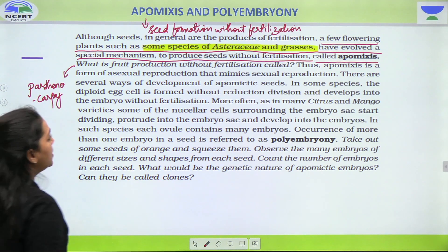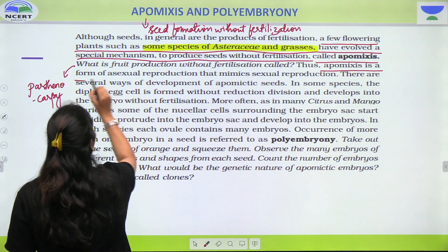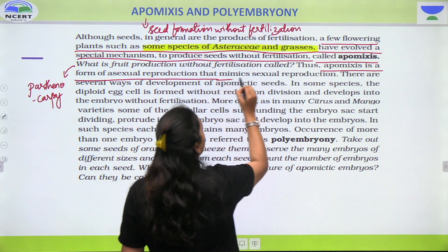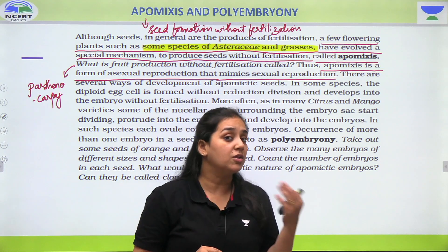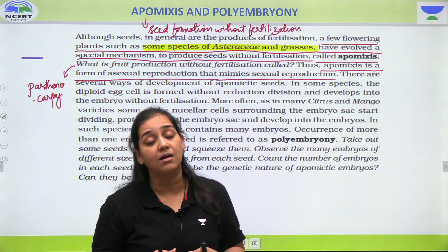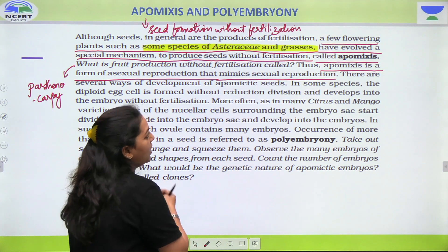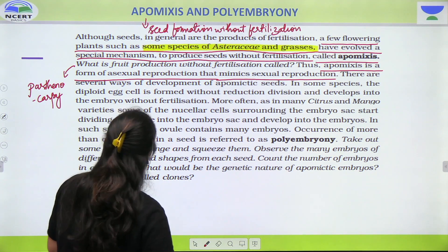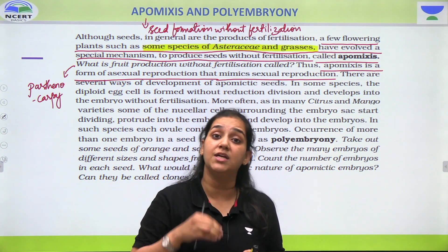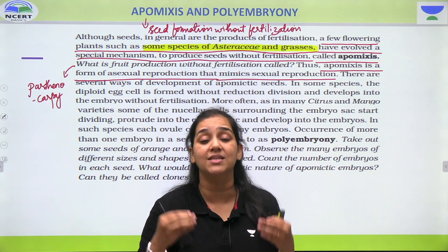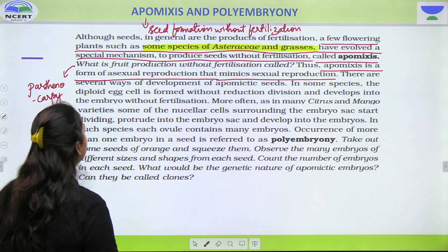Thus, apomixis is a form of asexual reproduction — a very important point. Apomixis is a form of asexual reproduction that mimics sexual reproduction — bohot important point hai ye. Parthenocarpy kya tha? Asexual reproduction tha, but vahan peh seed formation nahi ho rahi thi, toh you were not able to say that it mimics sexual reproduction. But yahan peh apomixis kya hai? Asexual form of reproduction hai, but at the same time seed formation bhi ho raha hai. So you are saying that it mimics sexual reproduction — a very important statement please mark it.